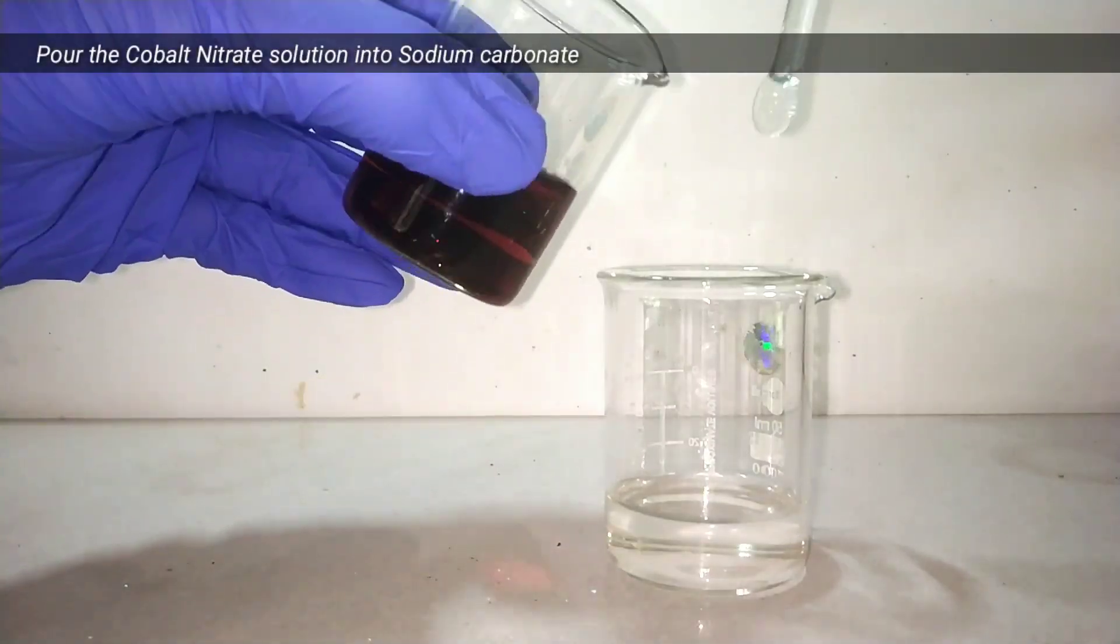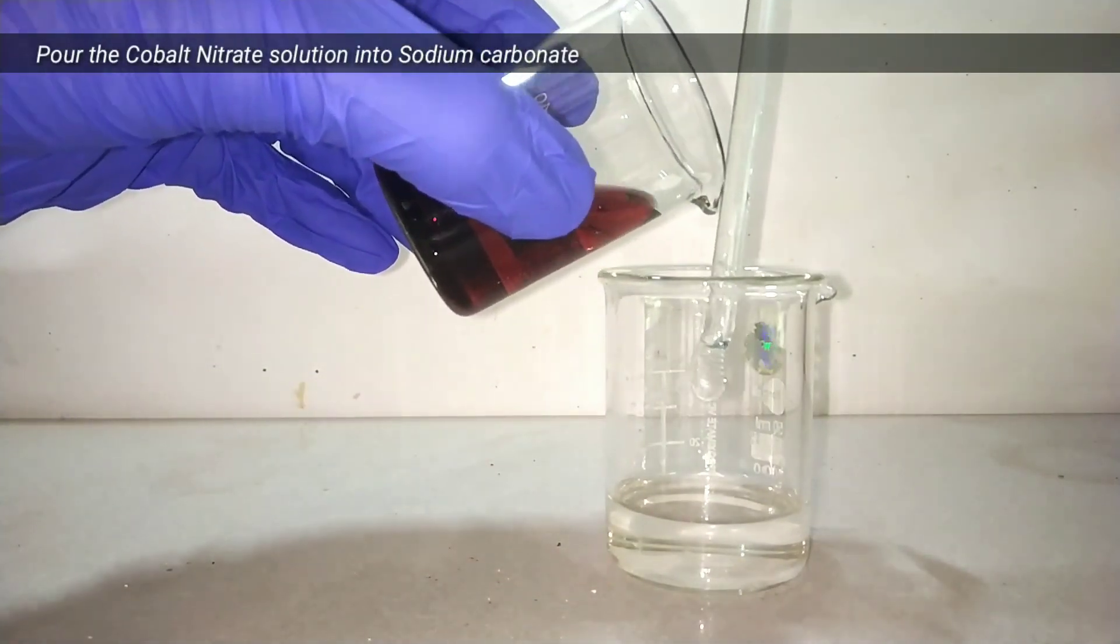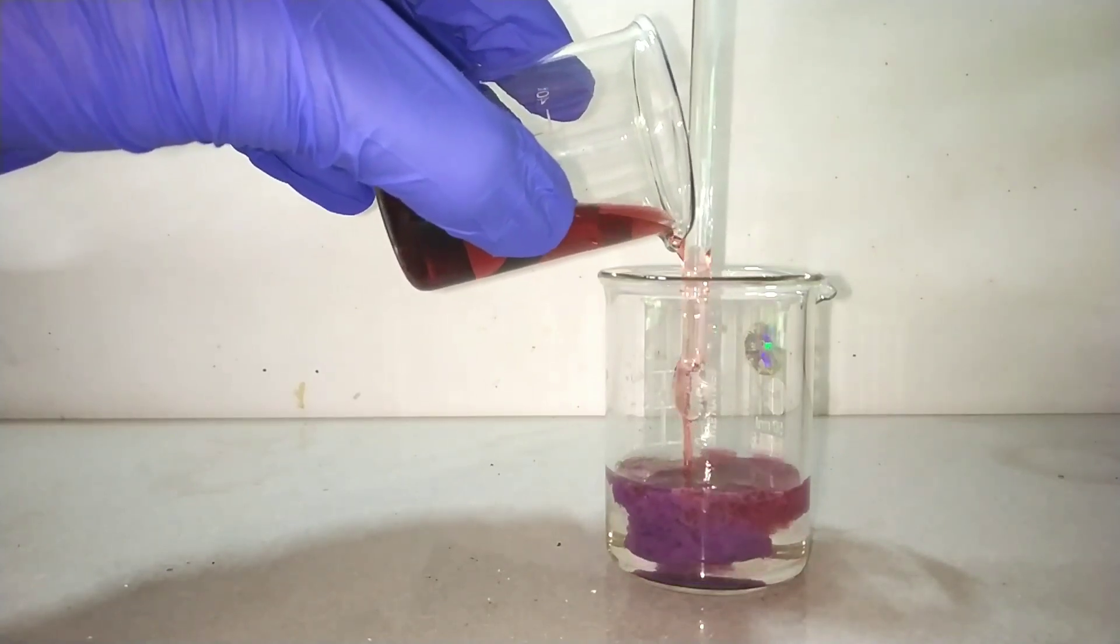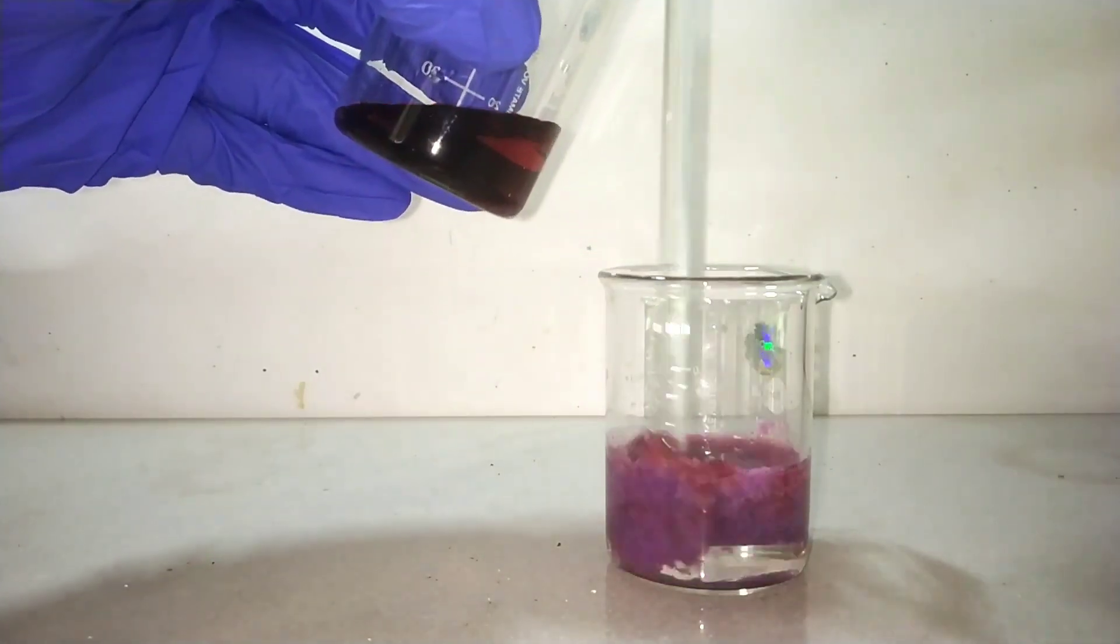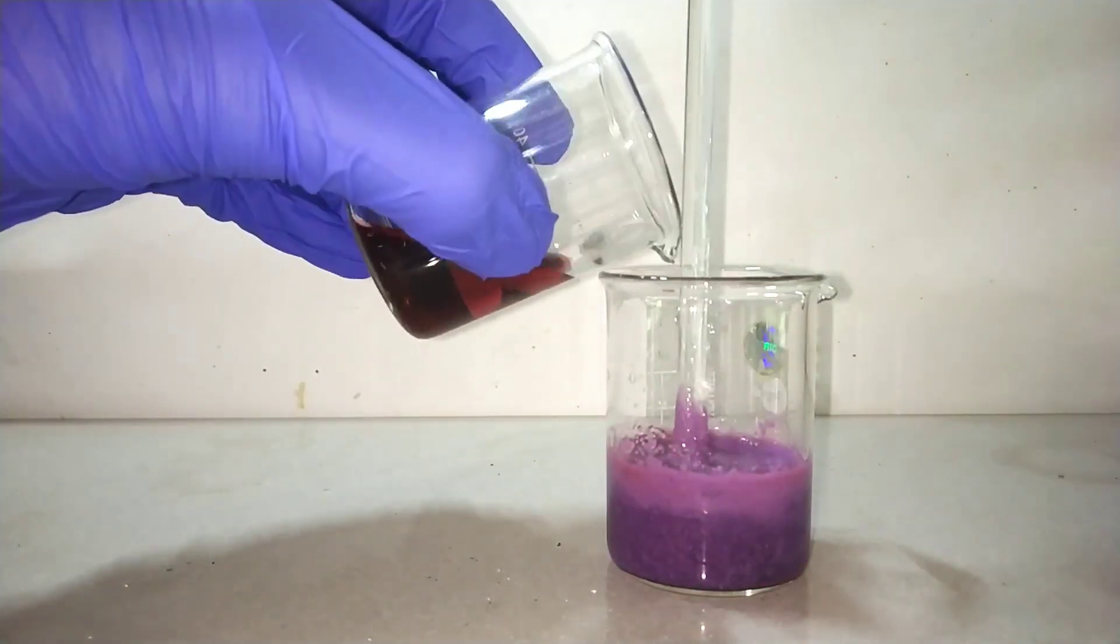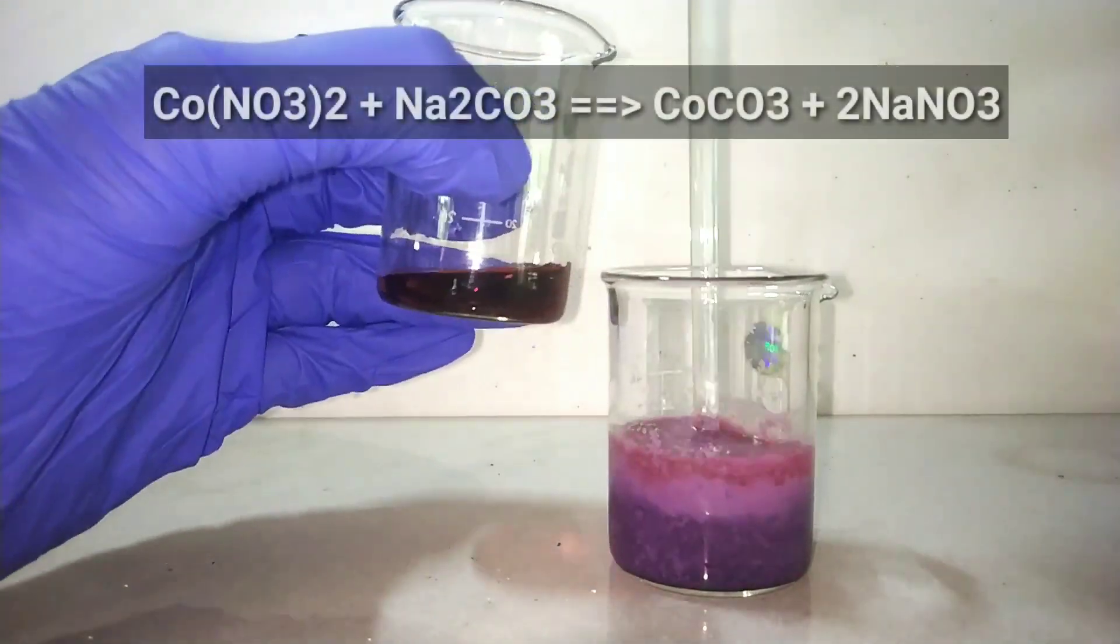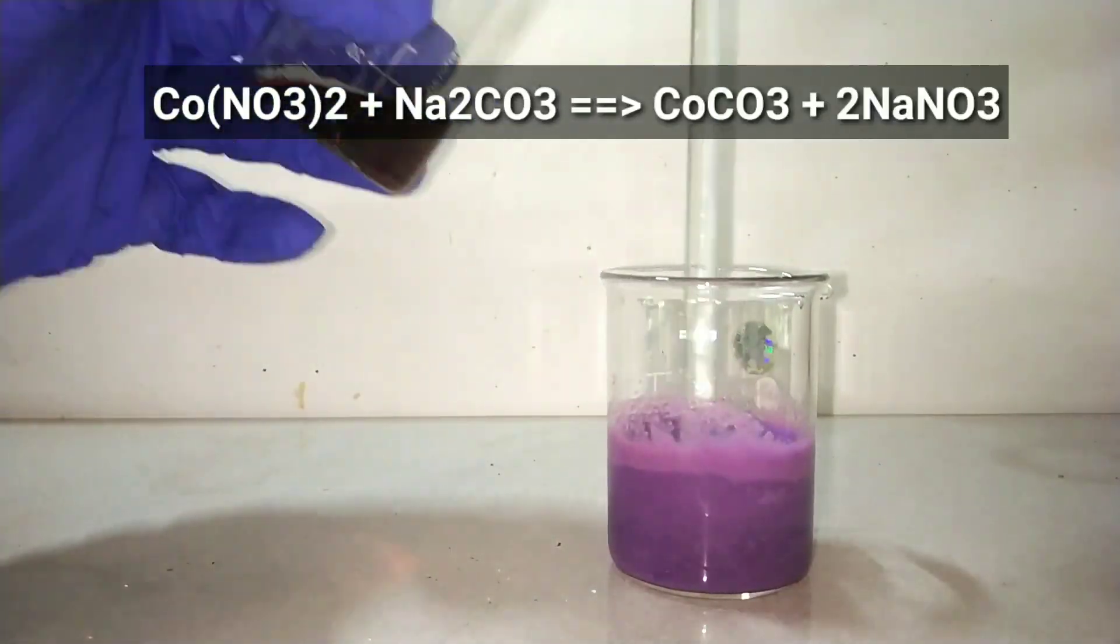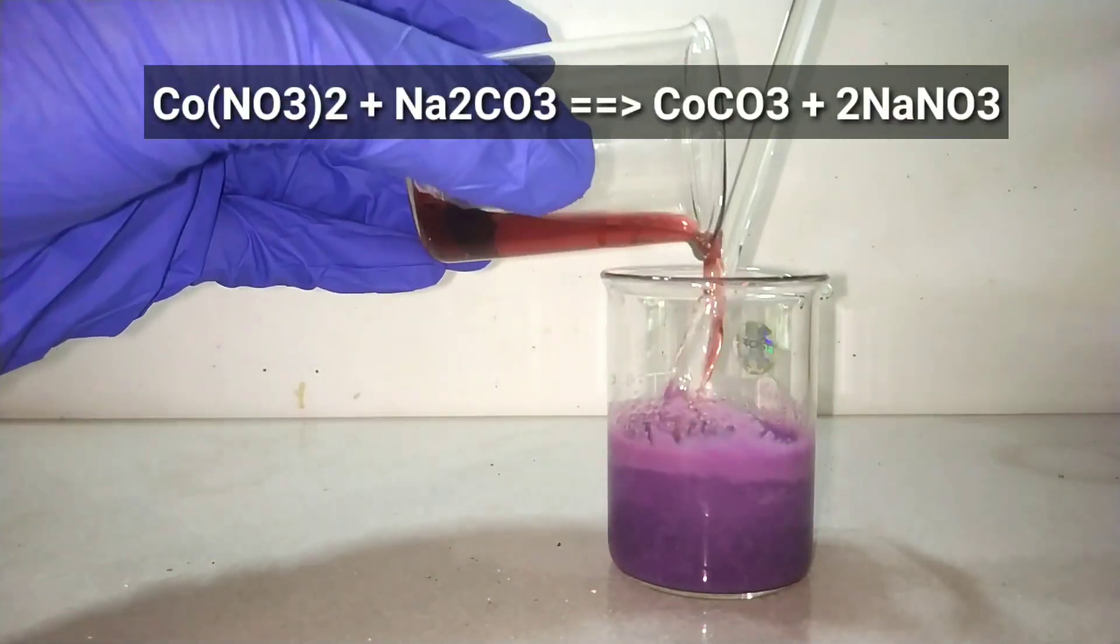Next we add the cobalt 2 nitrate solution into the sodium carbonate. Immediately you see the formation of a purple or violet colored precipitate. With the help of the glass stir rod, stir the contents so that clumps get broken down and all the particles react with each other.